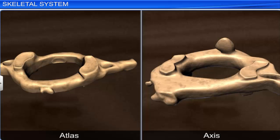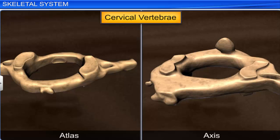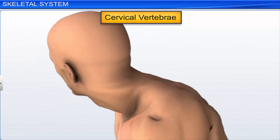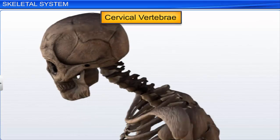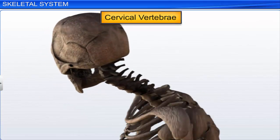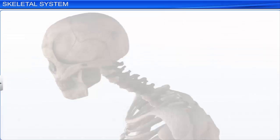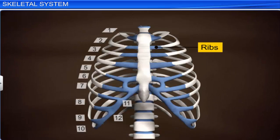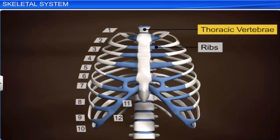In fact, the first two cervical vertebrae, called the atlas and the axis, allow nodding and rotating movements of the head. There are twelve pairs of ribs, where each rib is a flat bone attached dorsally to the thoracic vertebrae.